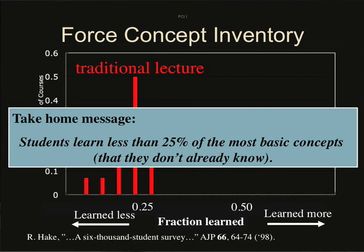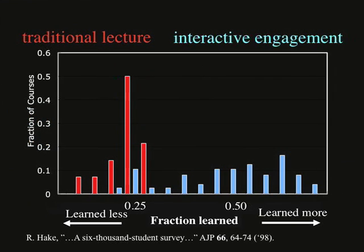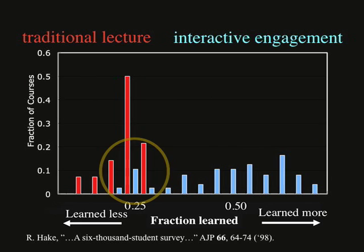Richard Hake's results showed that in traditional lecture courses, students only learn approximately a quarter of what they could be learning. In interactive engagement courses, he found that learning gains ranged from 25% to 70%. So the lowest achieving interactive engagement courses performed as well as the highest achieving traditional courses.